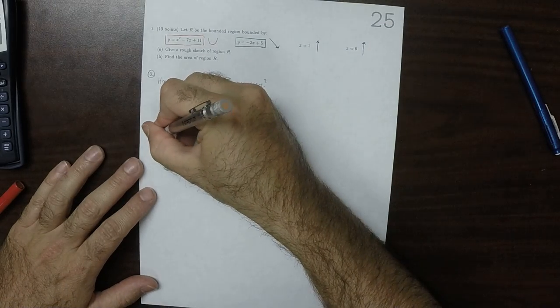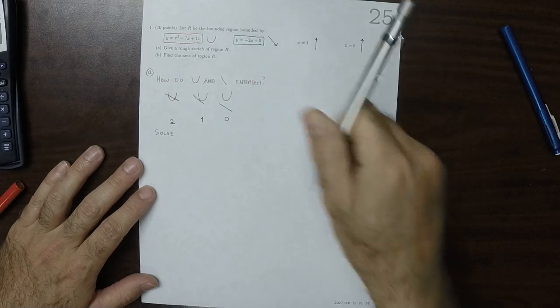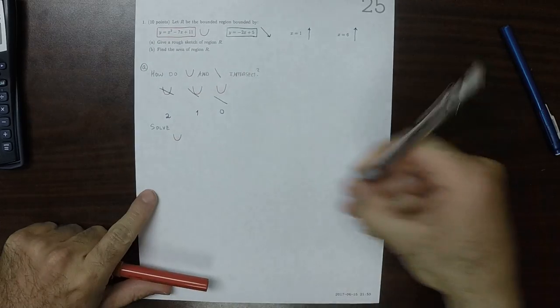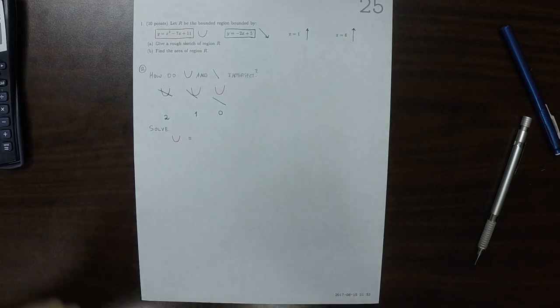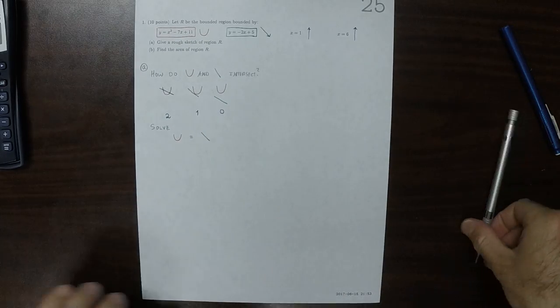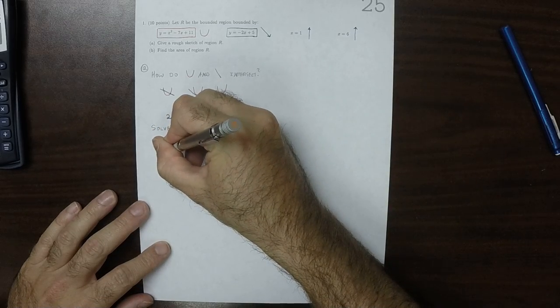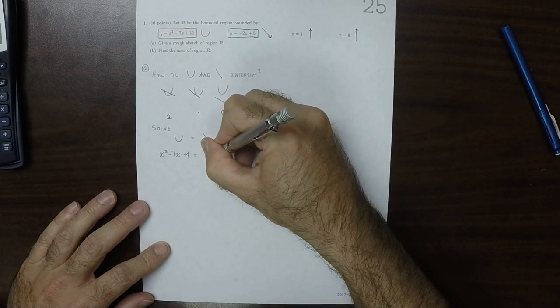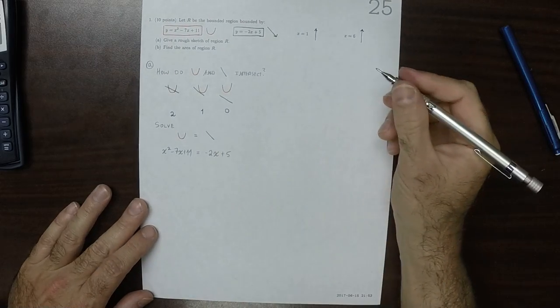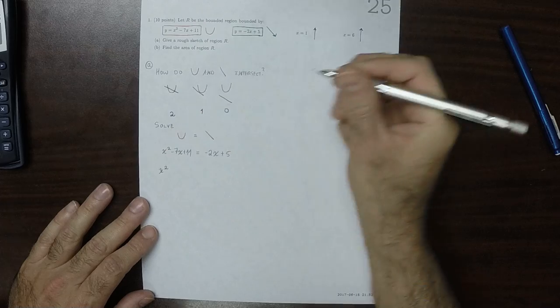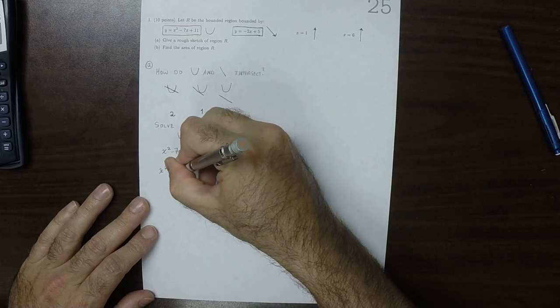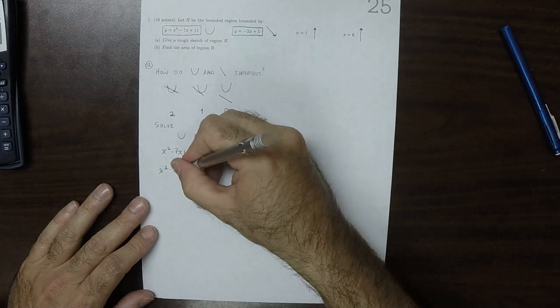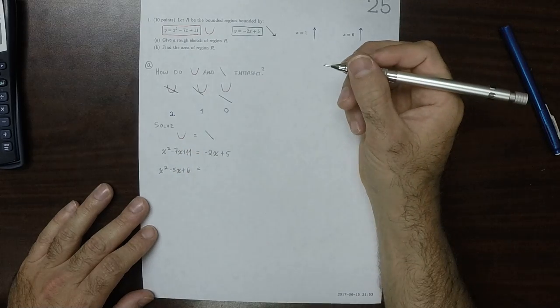The way that we address this is by solving, specifically, we're gonna solve the parabola equal the line. That is to say that x squared minus 7x plus 11 is equal to negative 2x plus 5. Move everything to the left-hand side, you get x squared minus 5x plus 6 is equal to zero.